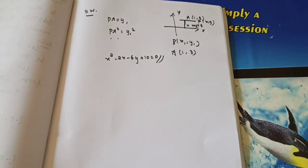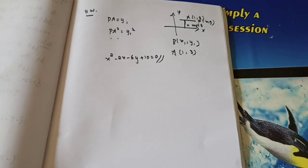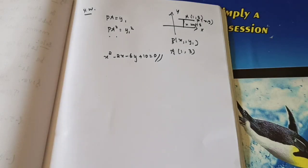The remaining 4 problems we will see in the next class. Be safe. Please write down everything. Those who have not completed the previous chapters, complete them and take down this new chapter. Today we learned only locus and how to find the equation of a locus. Please learn whatever we completed today. We will meet in the next class with the exercise problems. Thank you, students.